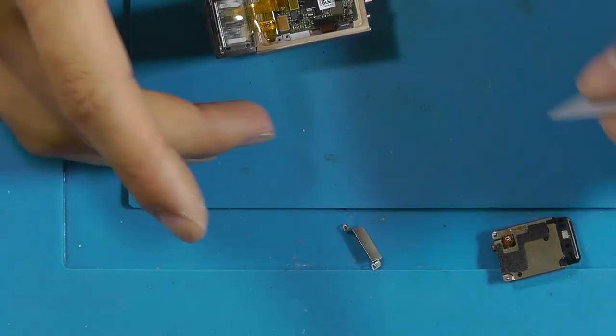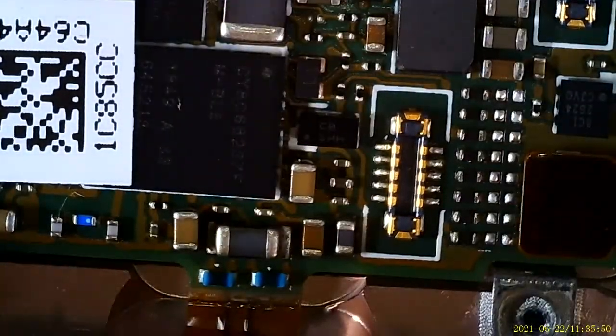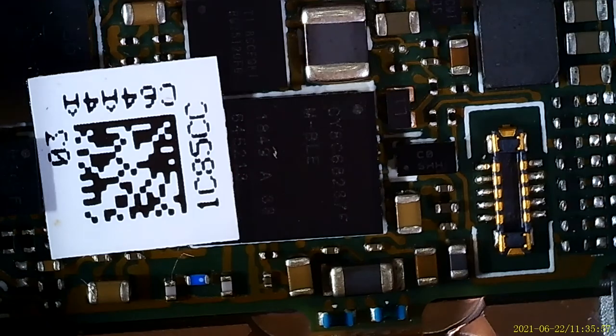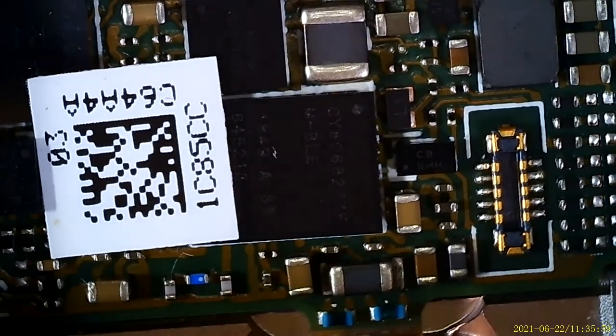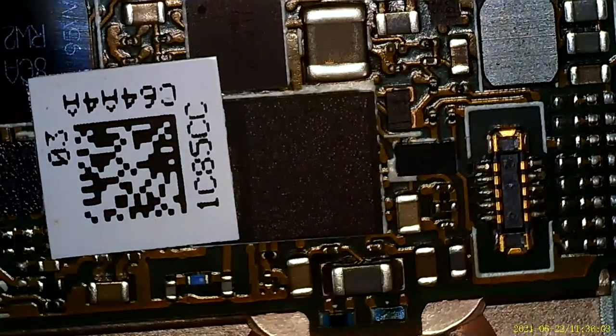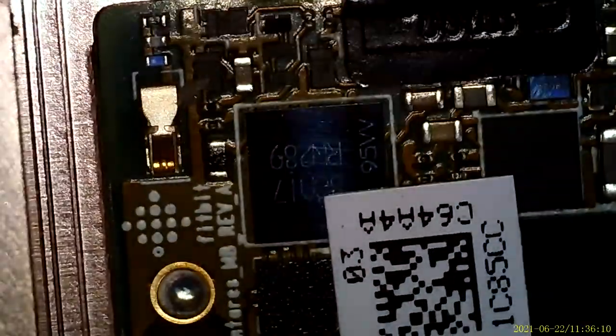So I'll just remove the screen for now. So I think that this is the main Bluetooth chipset because there's BLE written over it. But everything else looks fine.